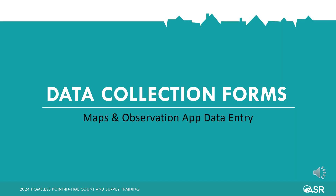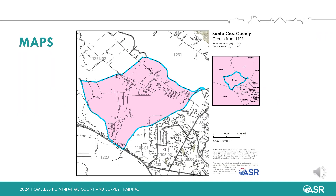The next set of slides will outline how to use the data collection forms on the morning of the count. Each team will be able to select specific routes and be given maps of those routes, which will be emailed to you prior to the count. If there are issues printing the map, there will be a few locations across the county where physical maps can be picked up. Your route will be outlined — please stay within the tracked border. Often the boundary of your route is a street. If the borderline is a street, count people on the inside side of the street, or the side that connects with the rest of your route. If there is someone moving back and forth across the street, you should count them.